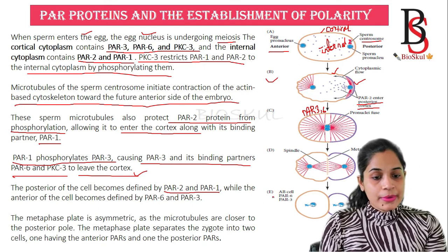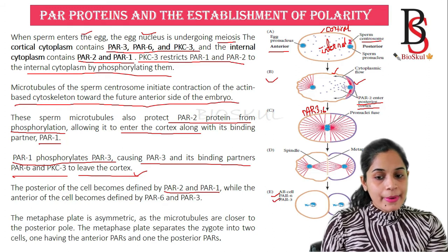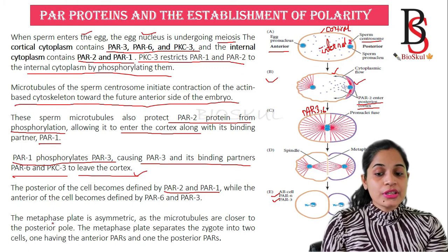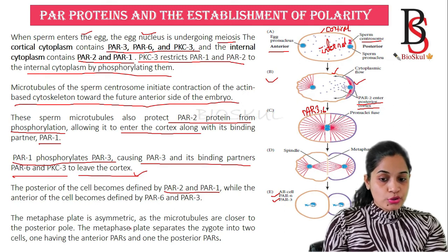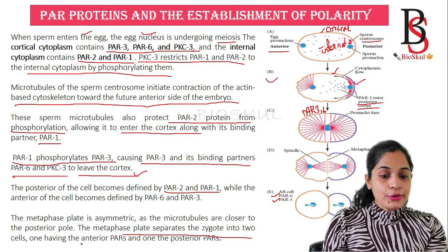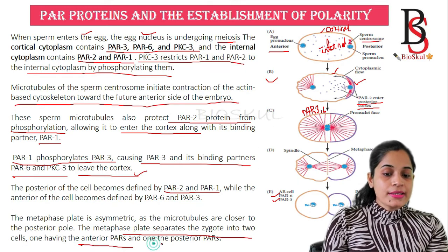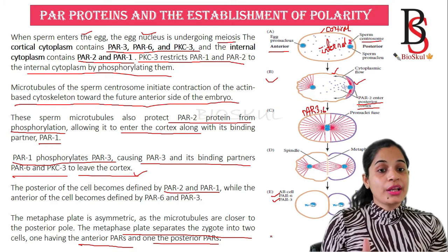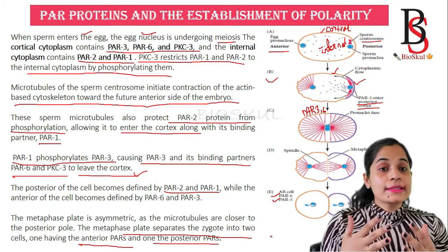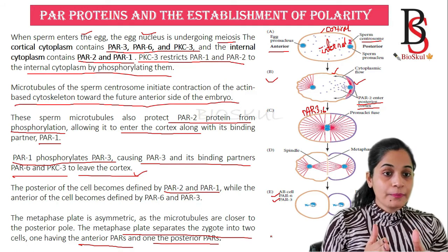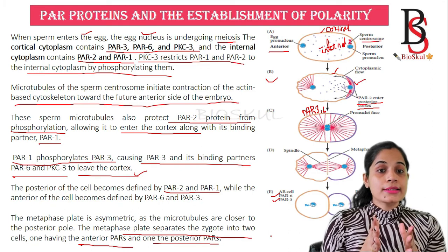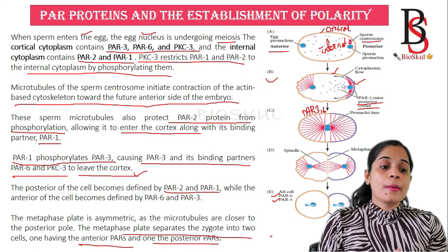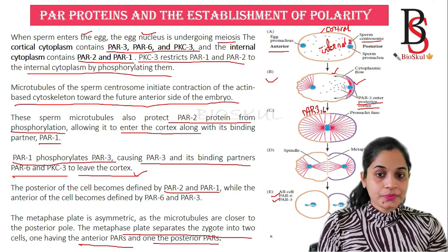The posterior cell becomes defined by PAR-2 and PAR-1, so the posterior end now has only PAR-1 and PAR-2. The anterior cell becomes defined by PAR-6 and PAR-3. As the metaphase plate is asymmetric and the microtubules are closer to the posterior pole, the metaphase plate separates the zygote into two cells — one having the anterior parts and another having the posterior parts.